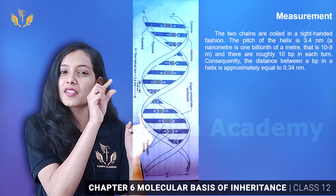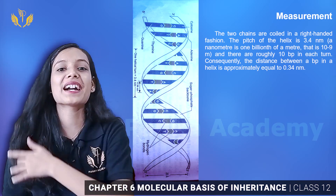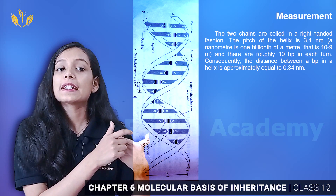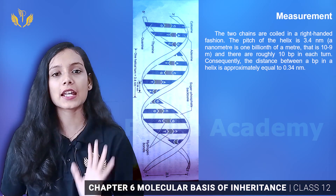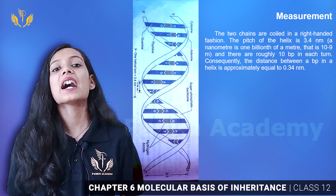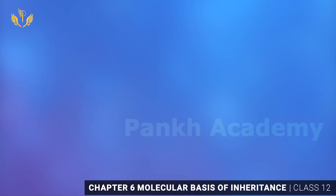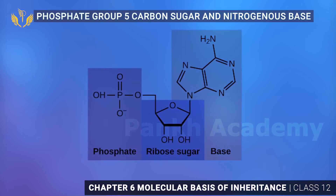There is a gap of 20 angstroms and 0.34 nanometers between base pairs. You have to remember these measurements. DNA is a highly coiled structure. Now you can see the structure here — phosphate, 5-carbon sugar, and nitrogenous base. This is a single monomer which is nucleotide.